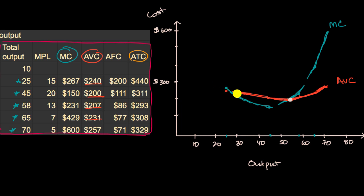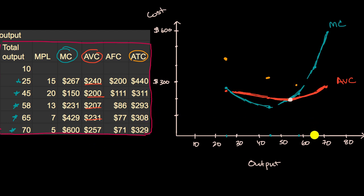At 25 units, average total cost is $440 — high because fixed costs are spread across few units. At 45 units, it's $311. At 58 units, it's $293. At 65 units, it's $308. And at 70 units, it's $329. So this is our average total cost curve.